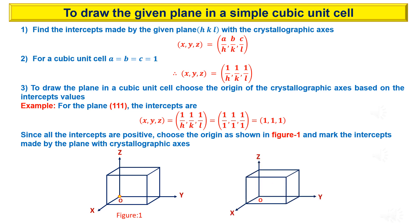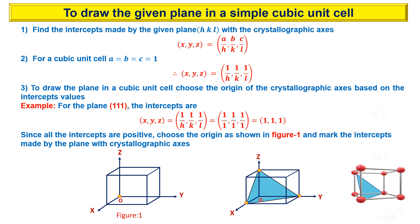Then mark the intercepts made by the plane with crystallographic axes and join the points to obtain the plane (1 1 1). It is important to note that the inverse of the Miller indices of the given plane gives the intercepts made by the plane with the crystallographic axes. If the intercept is infinity, then the plane will be parallel to that particular axis.